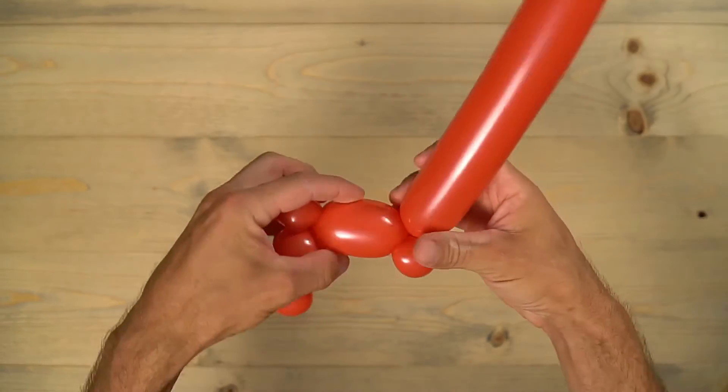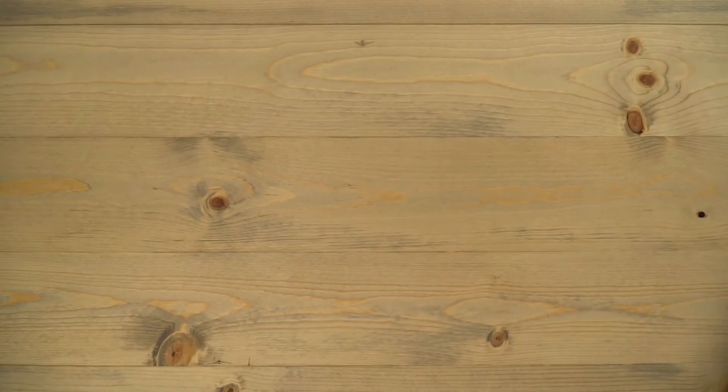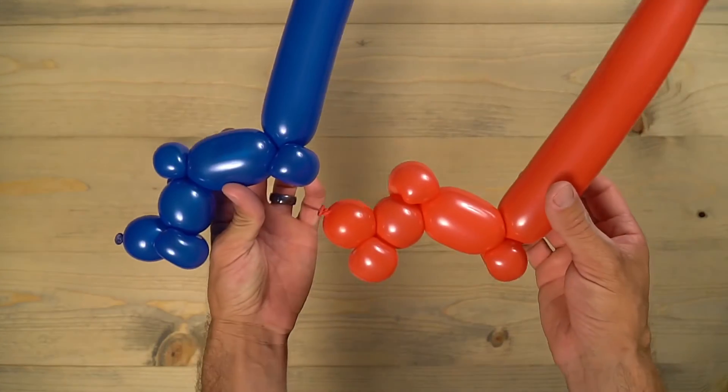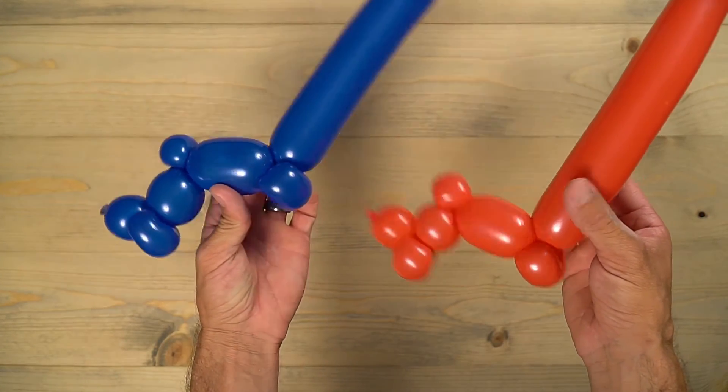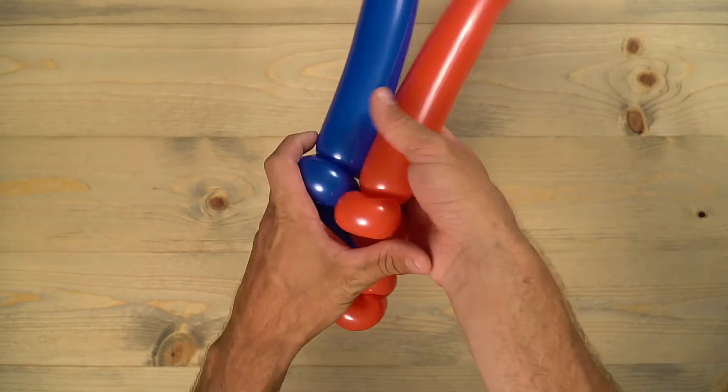So grab that first leg that you just had. Bring them side by side there to match up. And then you're going to twist those balloons together right there.